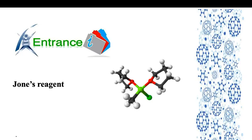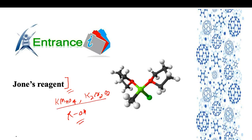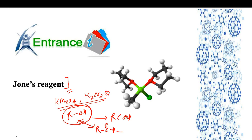Jones' reagent is a very specific oxidizing agent used to oxidize alcohols. In general, we use potassium permanganate and potassium dichromate (K2Cr2O7) to oxidize the alcoholic group, but these are strong oxidizing agents and oxidize alcohol all the way to carboxylic acid. Before converting alcohol to carboxylic acid, the alcohol is first converted to aldehyde — the carbon number remains constant — and then the aldehyde is converted to carboxylic acid.